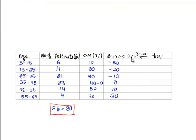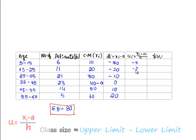Finding UI, here if we see, H is the class size, it's 10. Dividing the deviation by 10, we get minus 3, minus 2, minus 1, 0, 1, and 2.